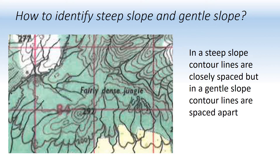How do you identify a steep slope versus a gentle slope? Where contour lines are very widely spaced apart, that is a gentle slope. Where they are very closely spaced, that is a steep slope. That is the difference between steep and gentle.